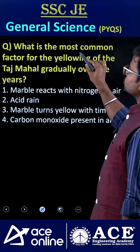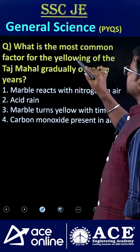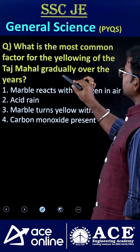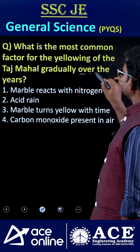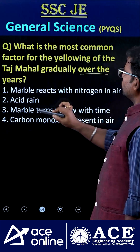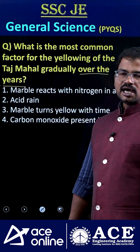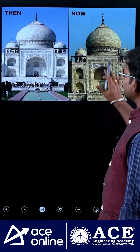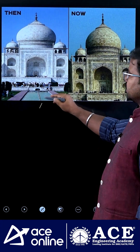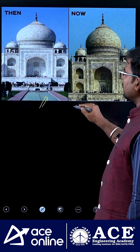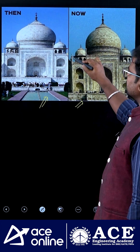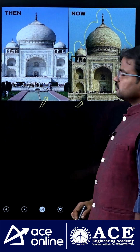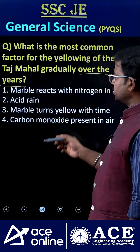What is the most common factor responsible for the yellowing of the Taj Mahal gradually over the years? The Taj Mahal's color has been completely changed — initially it looked like this, but now it has been converted to this discolored state. So which phenomenon is responsible for that?